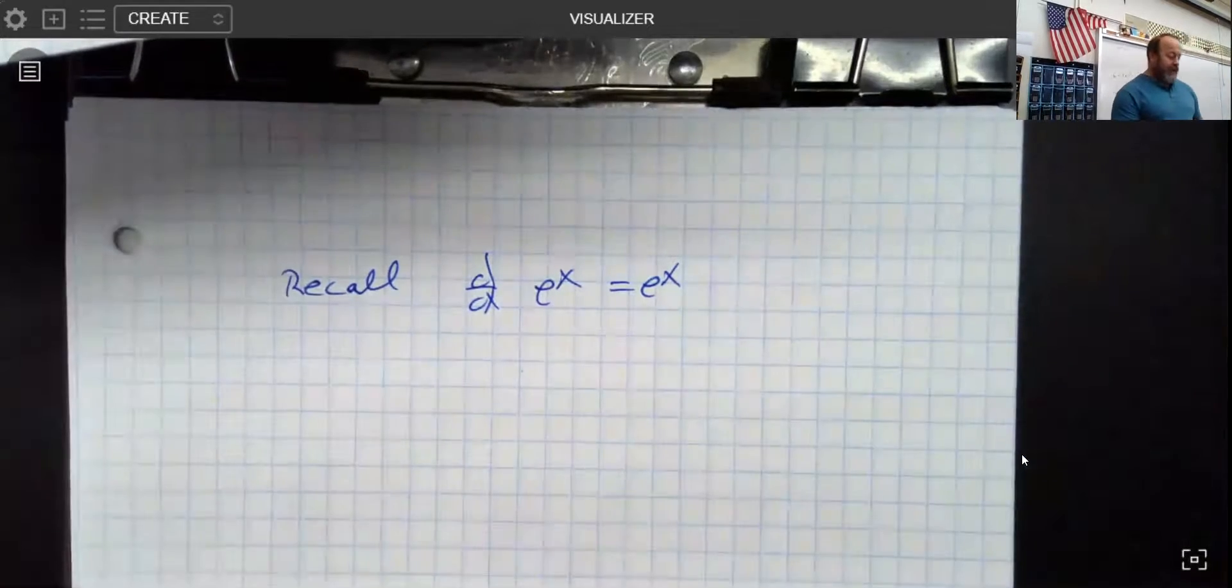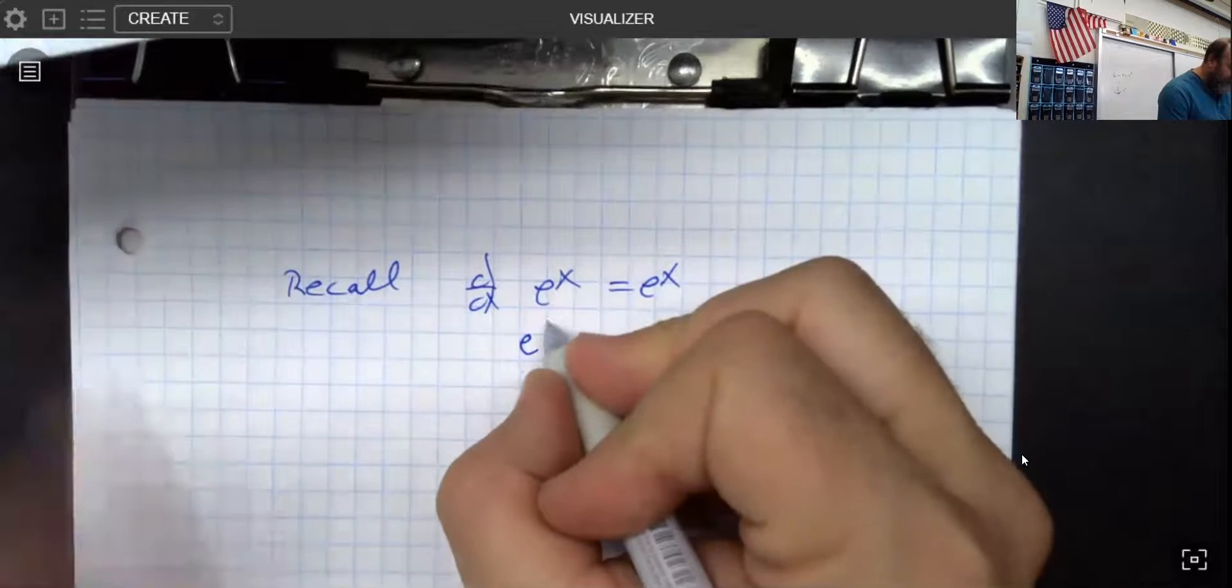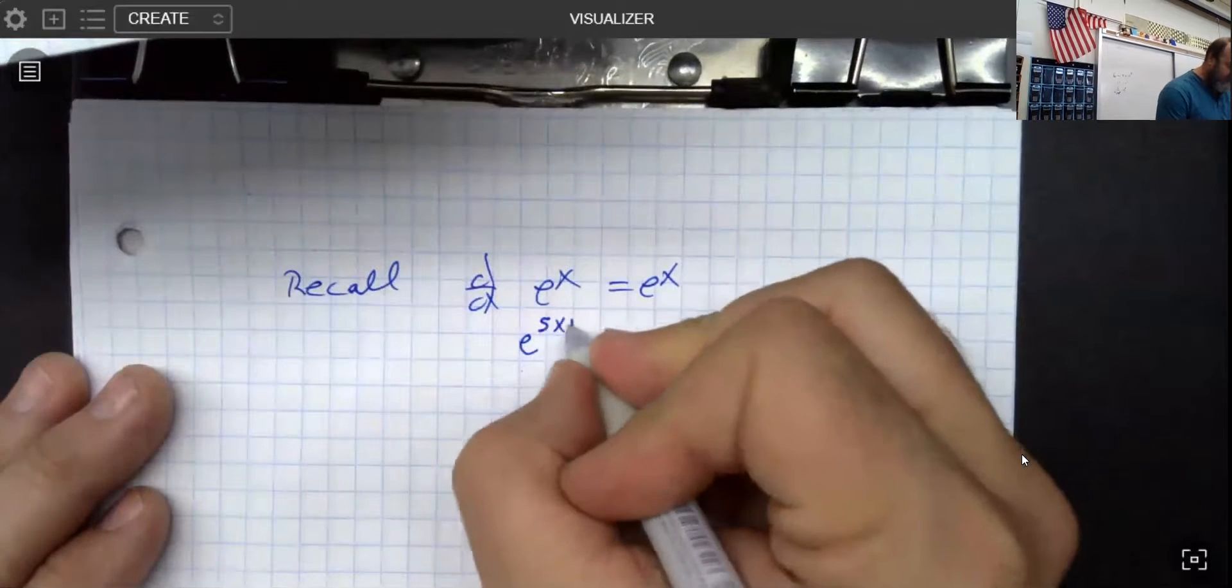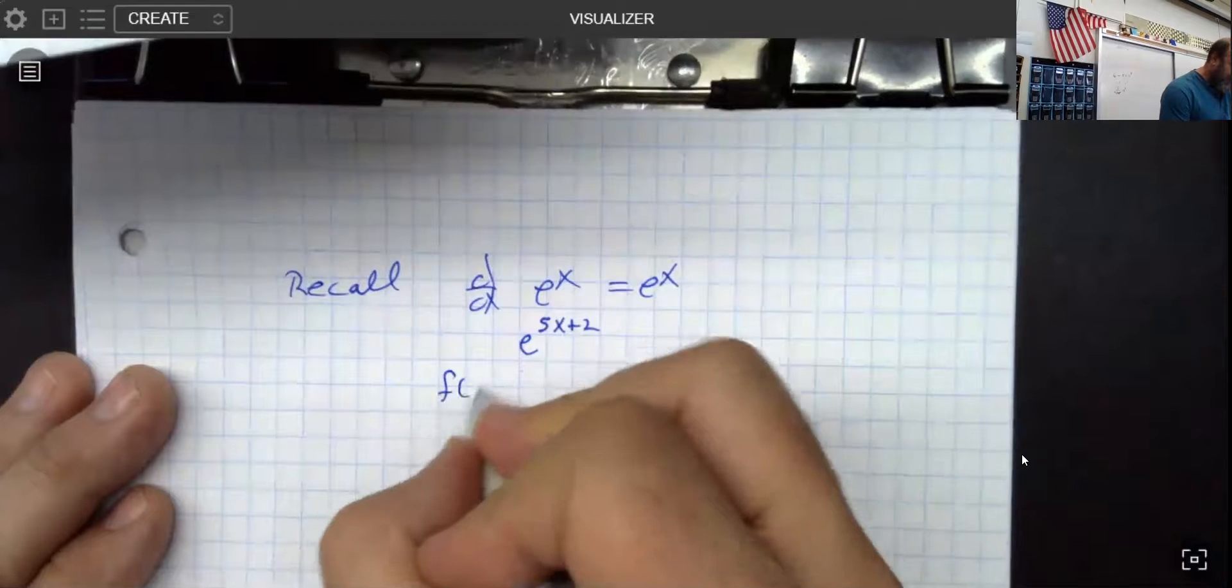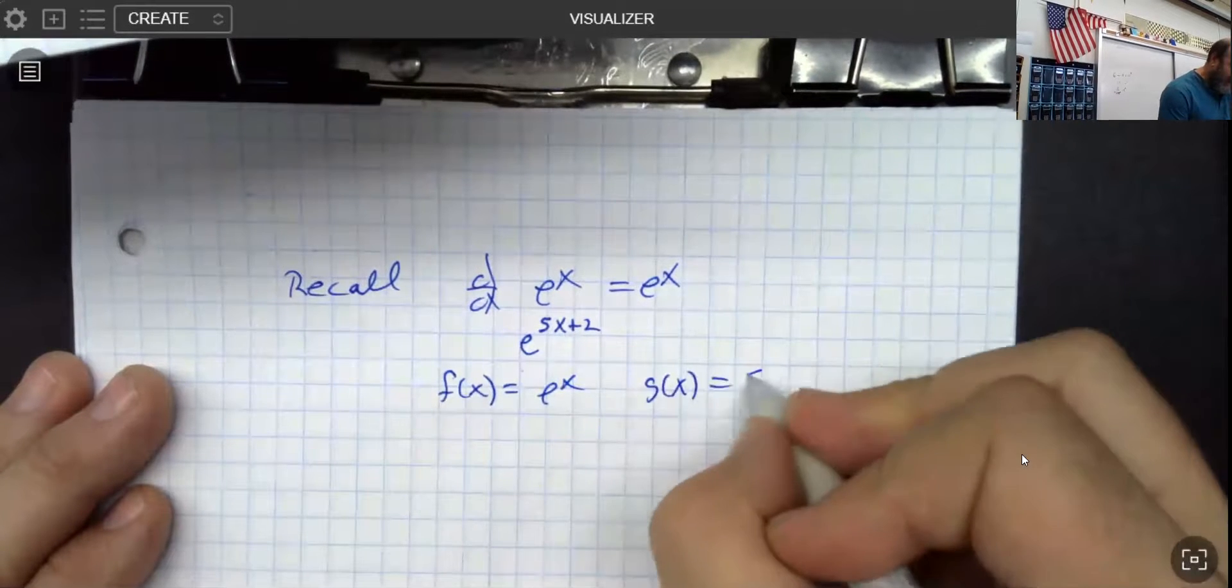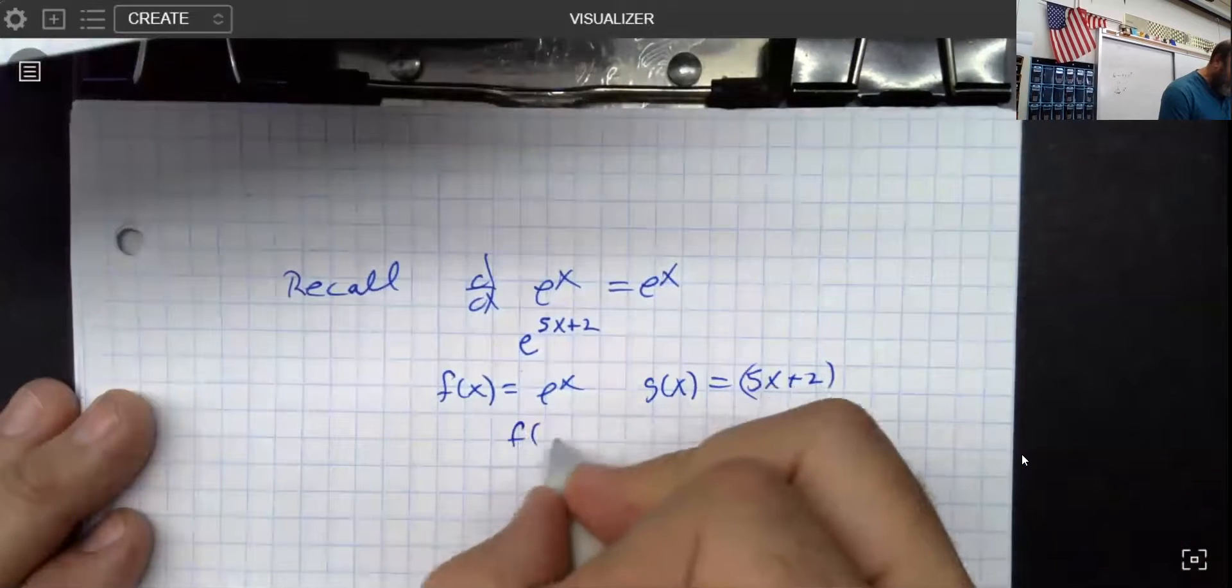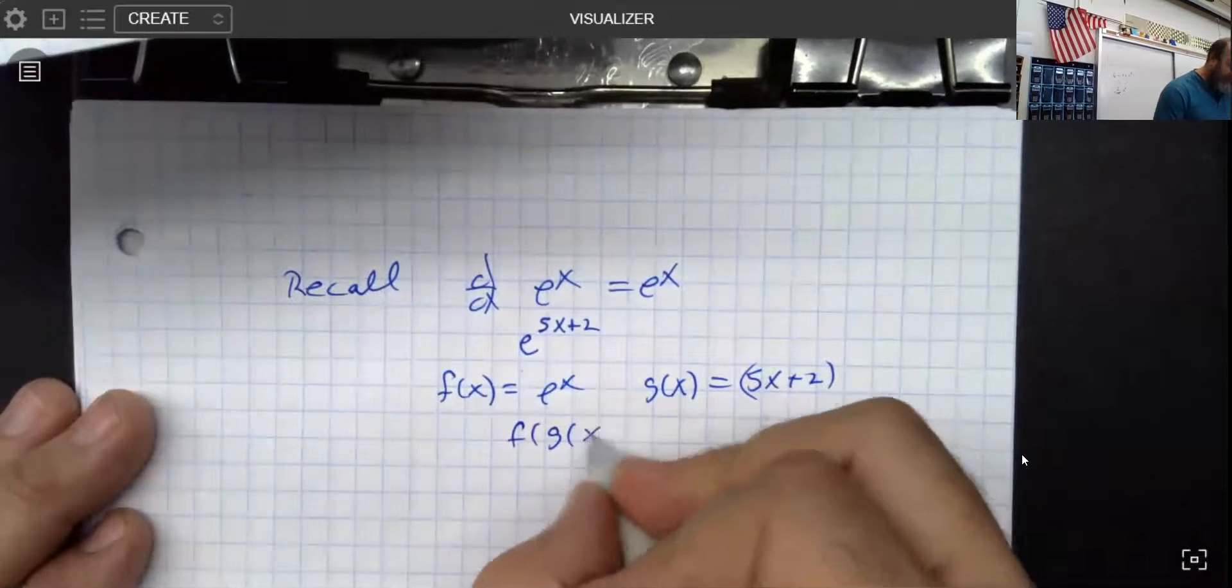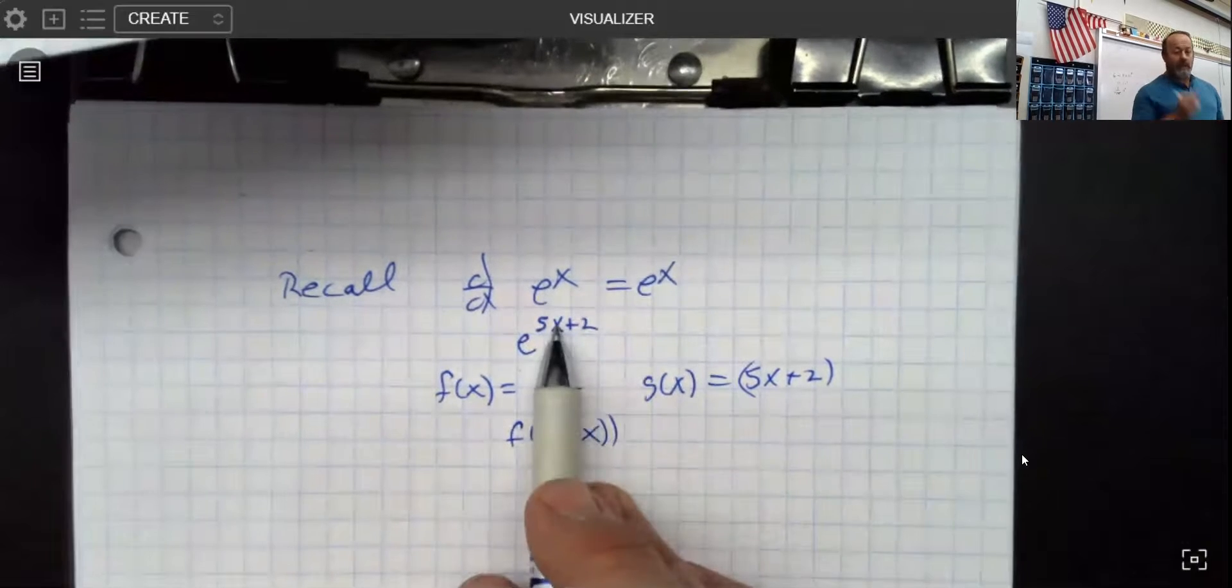But if you think about that, when you were looking at something like e to the, I don't know, something like say 5x plus 2, what you're thinking about is that f(x) would be e to the x and g(x) is the composite, and we are now looking at f of g of x, right, because if you replace this x with 5x plus 2, that's what we're dealing with.